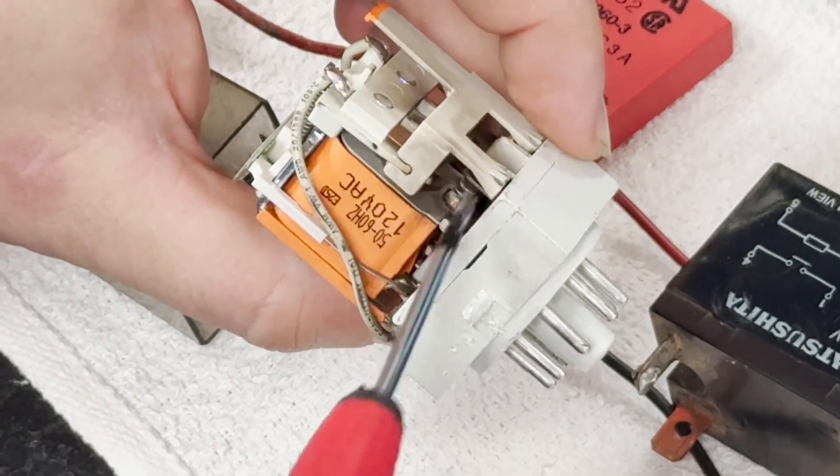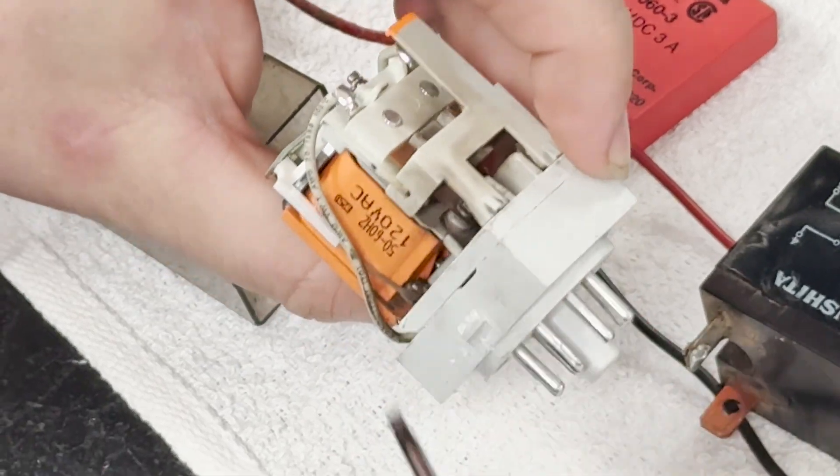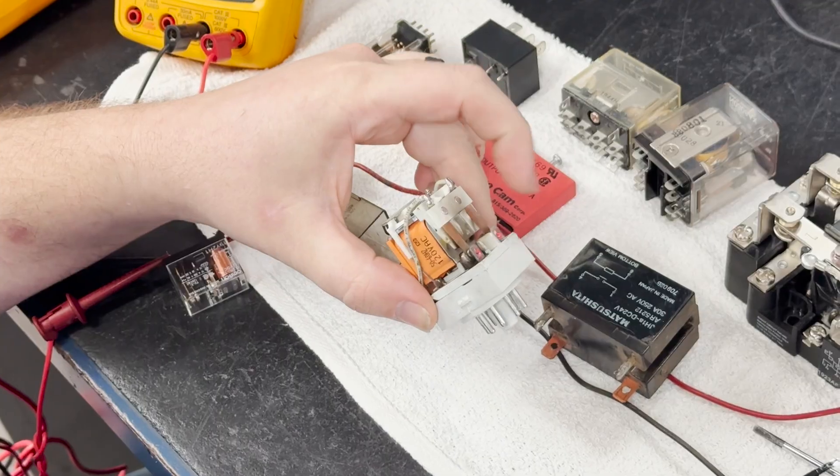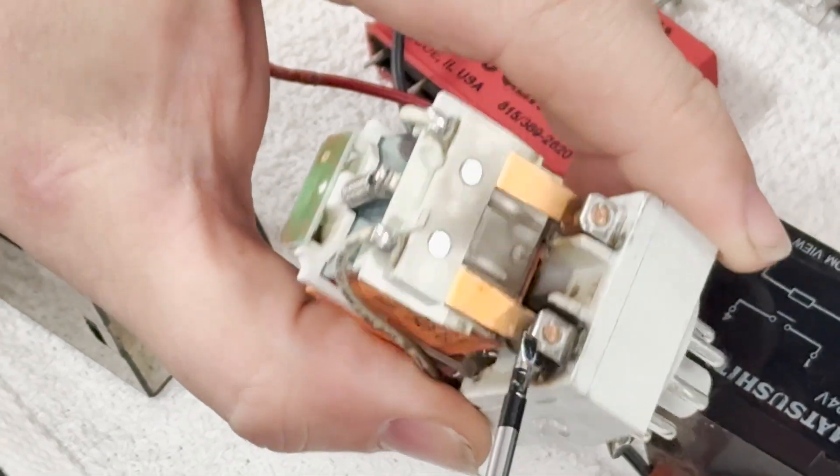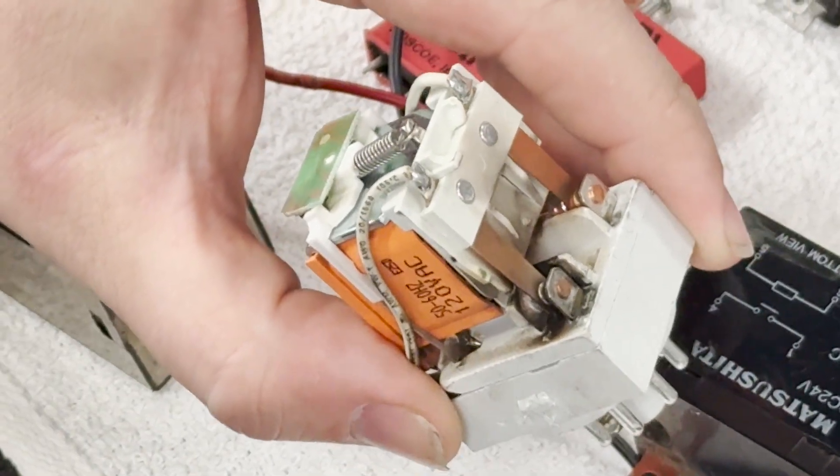However, you can see a severe amount of carbon that has accumulated on this set of contacts, and what this has caused is that these set of contacts can't make a proper electrical closure because of how degraded it is.